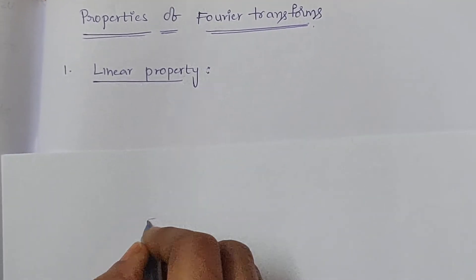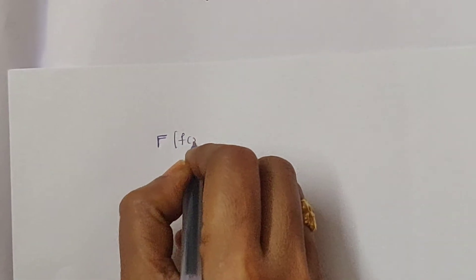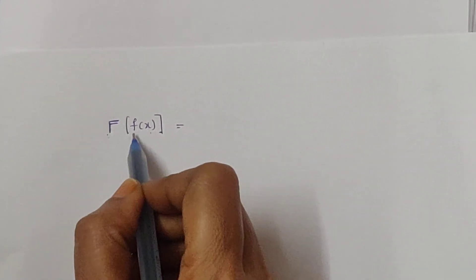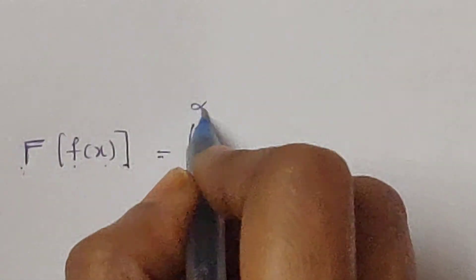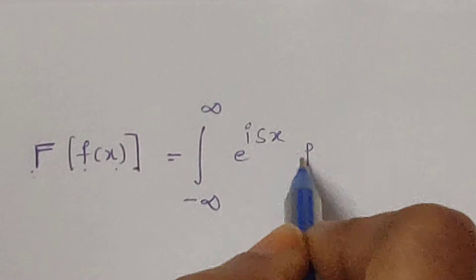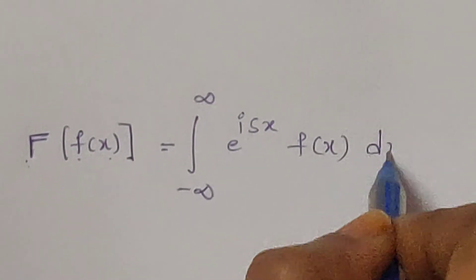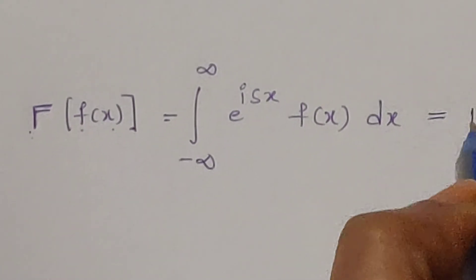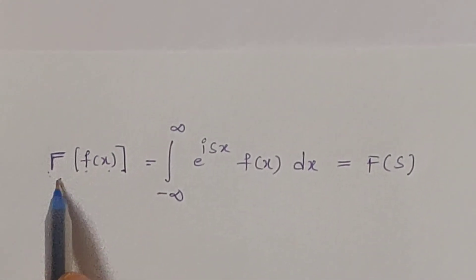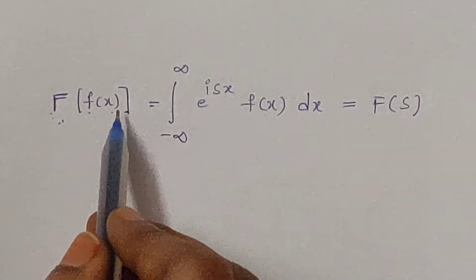The Fourier transform for the function f of x is denoted by capital F of f of x. The Fourier transform of f of x is equal to the integral from minus infinity to infinity of e power isx times f of x dx. It is also denoted with the symbol capital F of s.